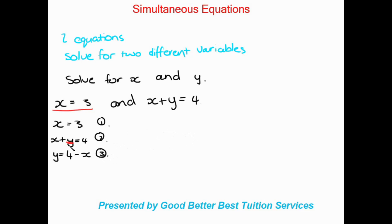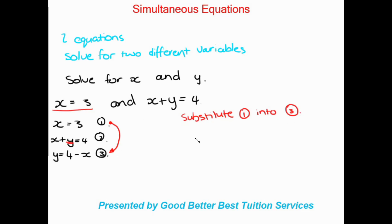We have X from equation 1 and our new equation 3 with Y as the subject. So we're going to substitute equation number 1 into equation number 3. Written out, Y equals 4 minus — and now we substitute in equation 1, where X equals 3. So we replace X with 3. That substitution is the simultaneous part — substituting one equation into the other.